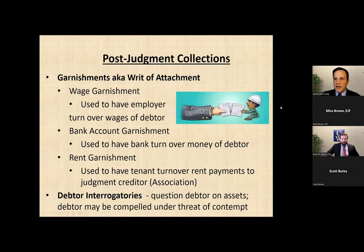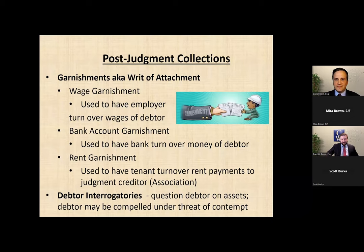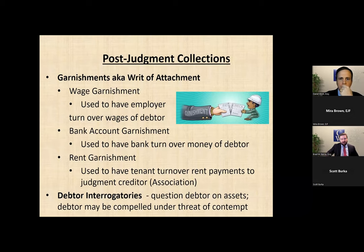Once you complete those procedures in either small claims or Superior Court, you've got a judgment. Of course we would wish those all get paid immediately, but unfortunately getting a judgment is just the first step in the legal process to getting paid. What a judgment allows you to do is attach to the assets of the debtor. Wage garnishments allow you to attach to a debtor's income — if you can find out where they work, you can have their employer served with a wage garnishment where the court will order them to withhold a certain amount of their wages to satisfy the judgment. A bank garnishment is another option if you can find out where an owner banks, such as from checks they send to the association or automatic payment information.